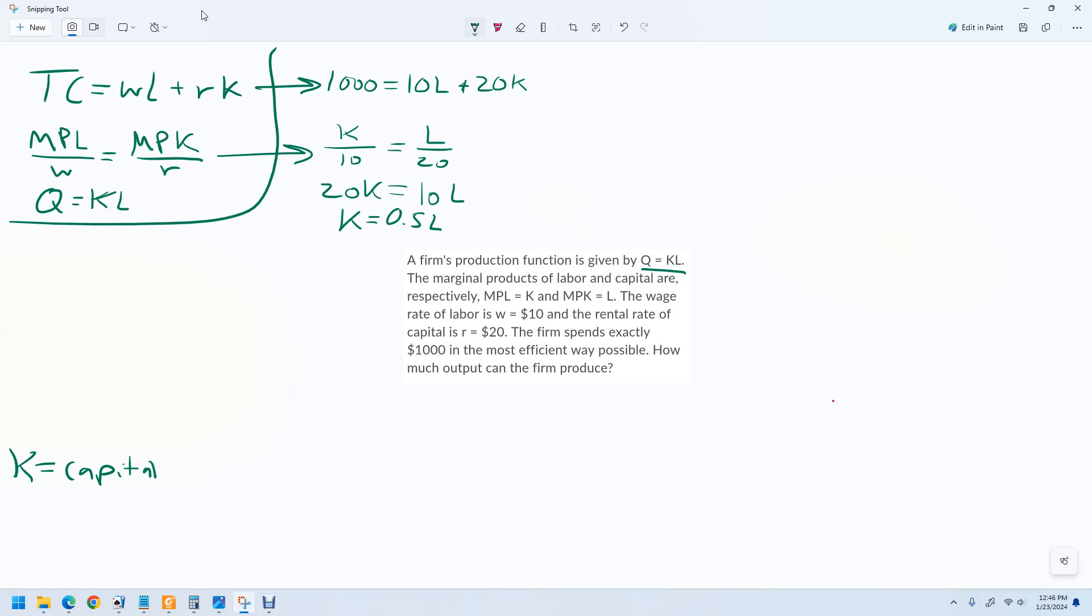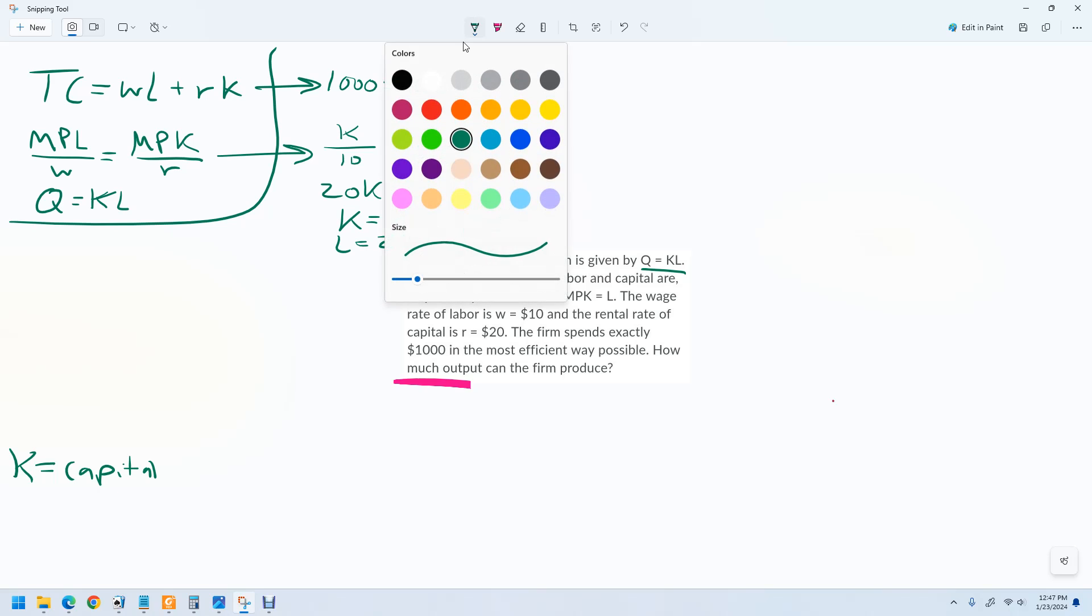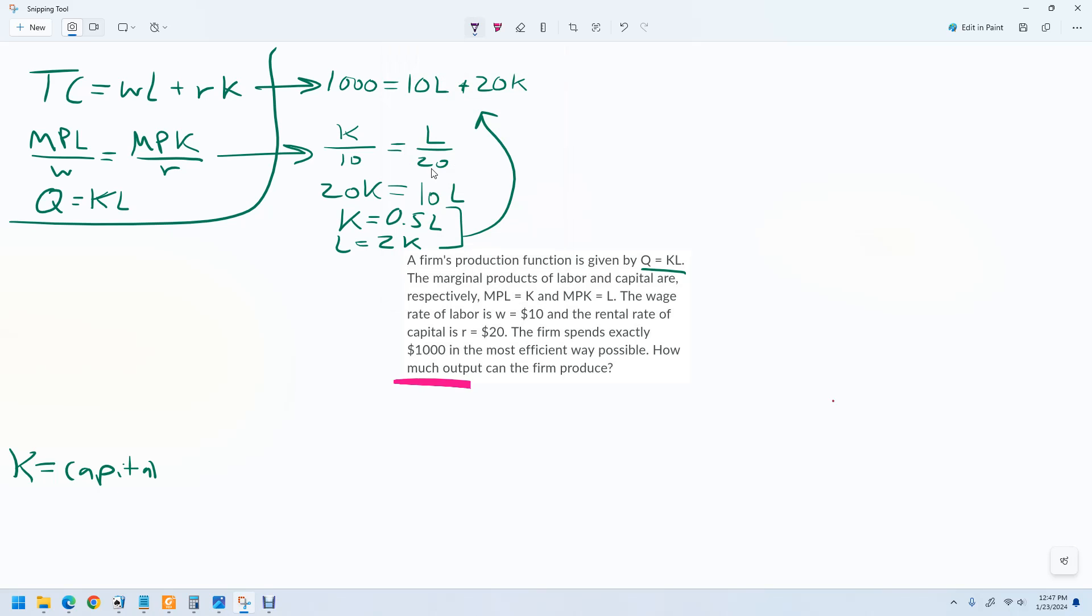And then for labor, if you rearrange that, divide both sides by 10, it would be 2K. So now either one, we're going to plug it in to there and then solve for K and L. Then we're going to use both of those, plug those guys back into here, and then that'll tell us what the output is, how much output the firm can produce. That's our target. That's what we're after.